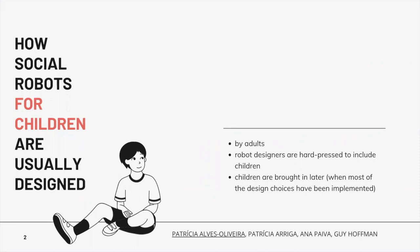This is how social robots have been traditionally developed for children. They are developed by adults who have a different mindset of a child. There is a pressure for robot designers to include end users, such as children, in the design process. What usually happens is that children are included only in later stages when the design choices have been implemented and there is little space for change. Including the voices of children in the design of a social robot is important because any robot that accounts for children's needs and values will be easily accepted, adopted, and honor their developmental stage.